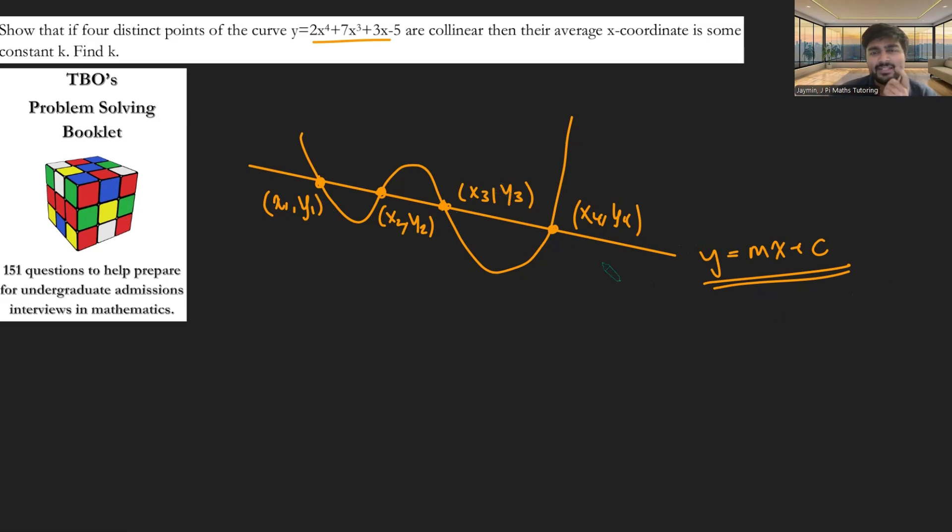And we want to find the average of these x-coordinates. And this seems quite bizarre, given that we don't know what the four points are, nor do we know what this straight line is.